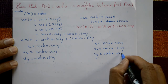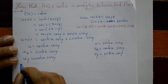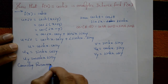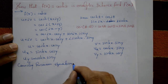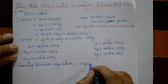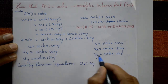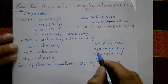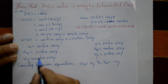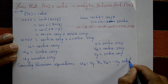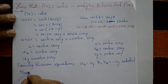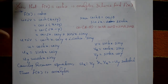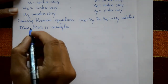Differentiating v with respect to y gives cosh(x)·cos(y). The Cauchy-Riemann equation ∂u/∂x = ∂v/∂y is satisfied. Also, ∂v/∂x = sinh(x)·sin(y) = -∂u/∂y is satisfied. Thus f(z) = cosh(z) is analytic.